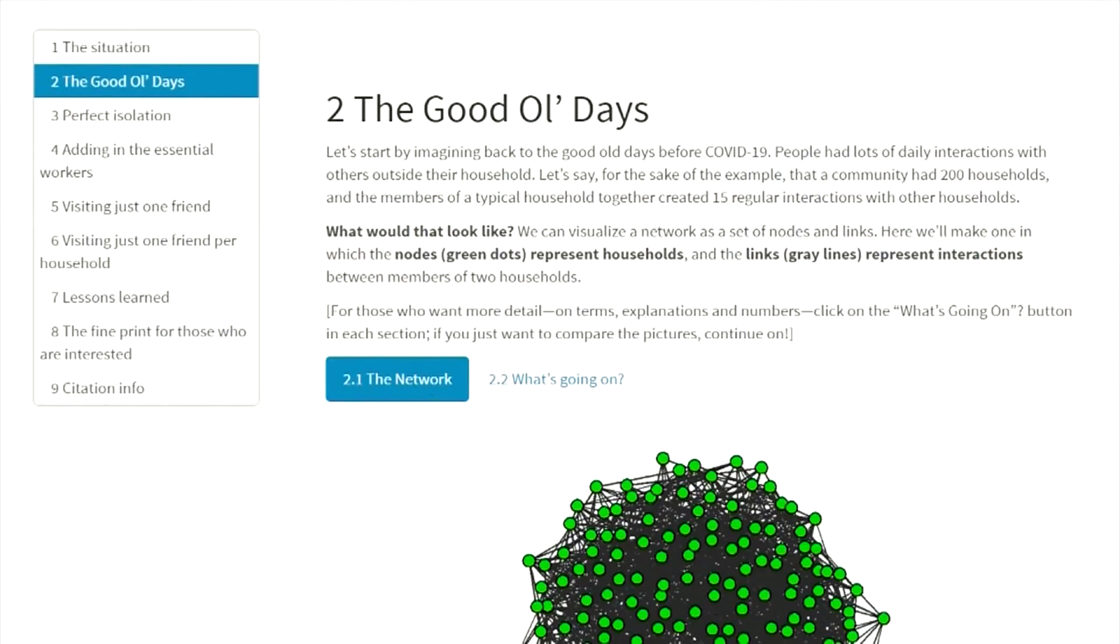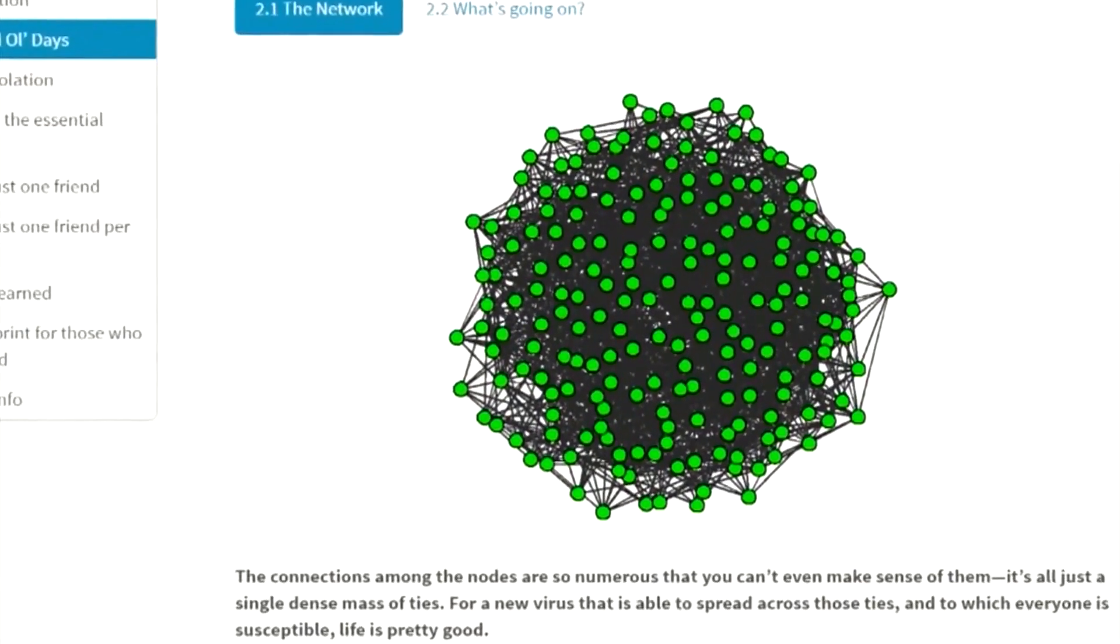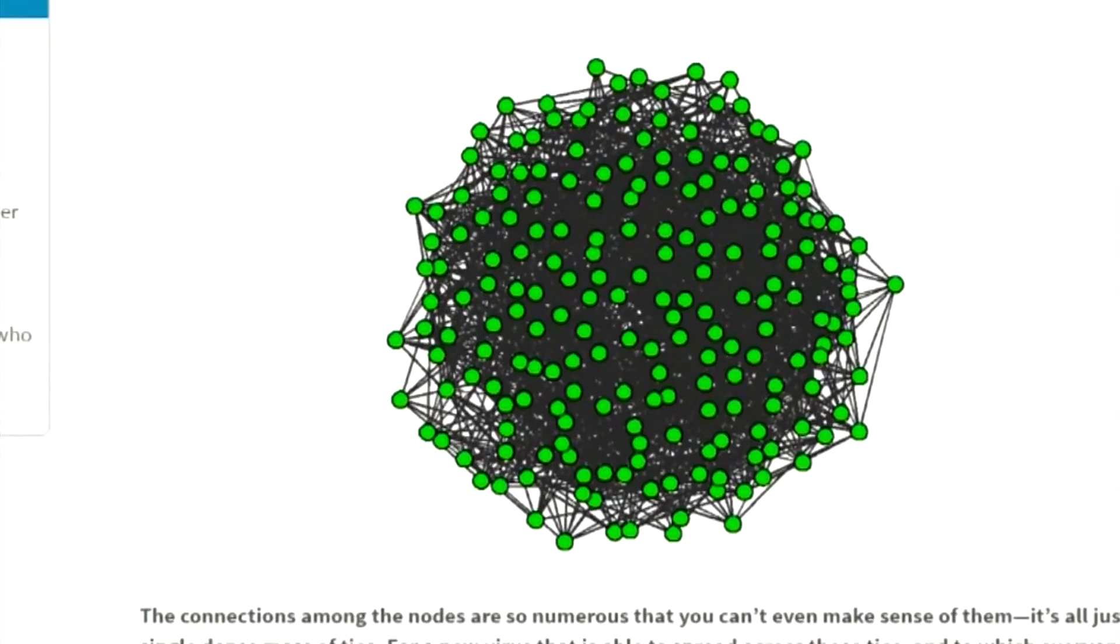The models the UW team created show here's what the good old days look like. Each dot is a household. Each gray line is a connection and an opportunity for the virus to spread.